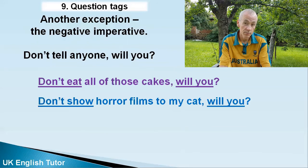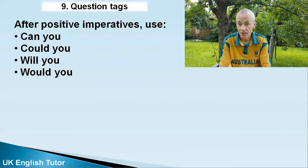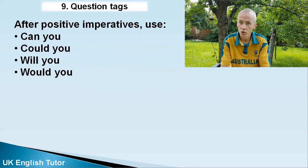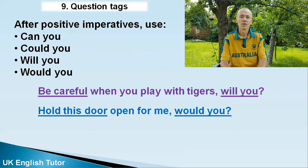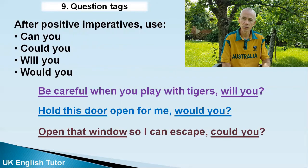The usual tag after a negative imperative is 'will you': 'Don't eat all of those cakes, will you?' 'Don't show horror films to my cat, will you?' 'Don't forget to call me, will you?' After a positive imperative, there are a few tags you can use — all using modal verbs: 'can you,' 'could you,' 'will you,' and 'would you.' 'Be careful when you play with tigers, will you?' 'Hold this door open for me, would you?' 'Open that window so I can escape, could you?'